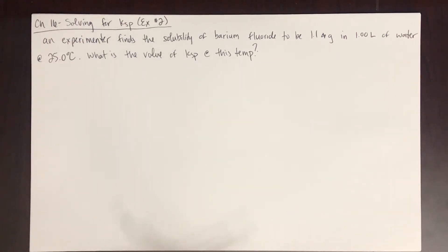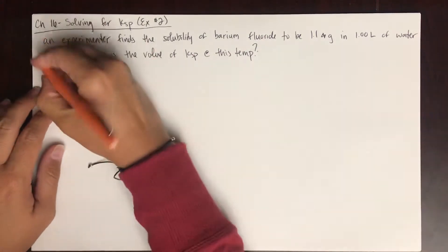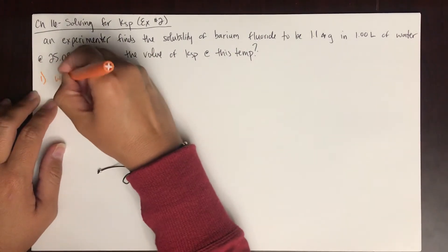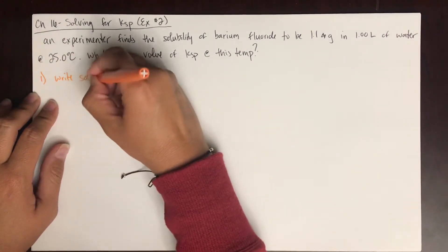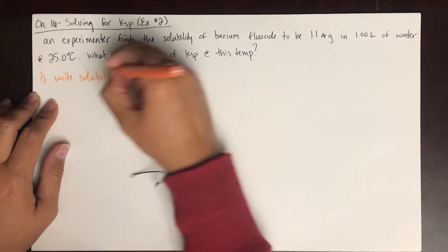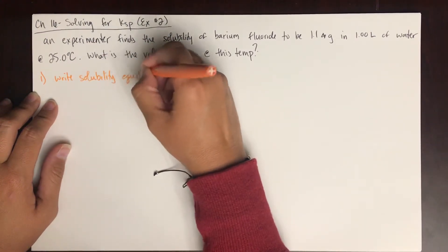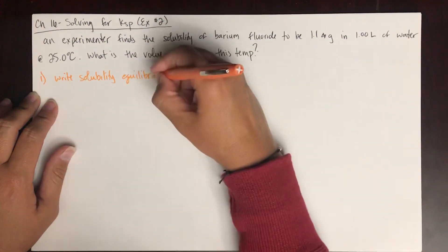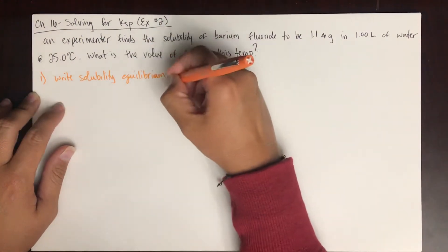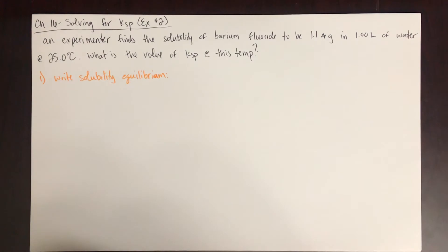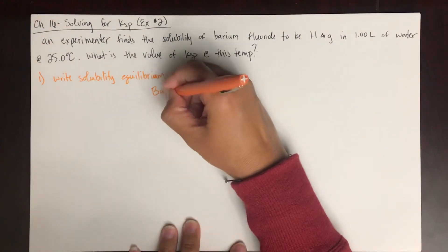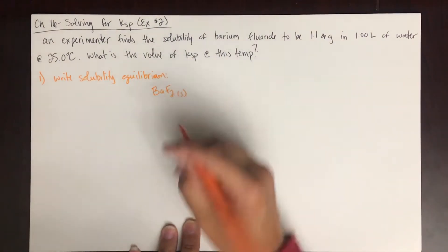Okay, first thing that's important is we need to write the equilibria, the solubility equilibria. So first we have to write barium fluoride. Remember that barium is plus 2 and fluoride is minus 1, so barium fluoride is BAF2, and it's a solid.